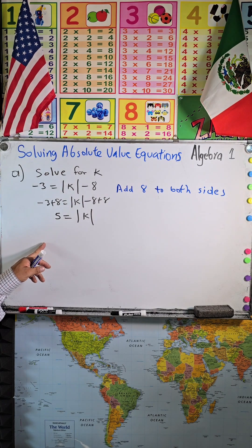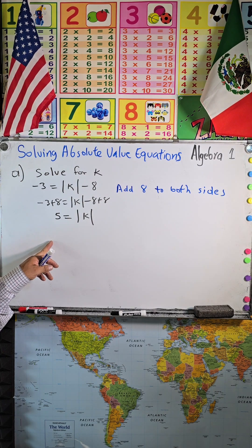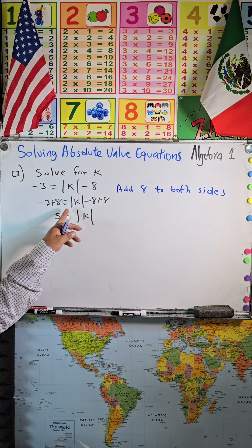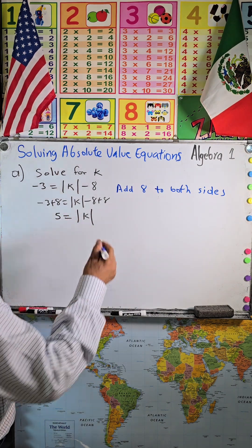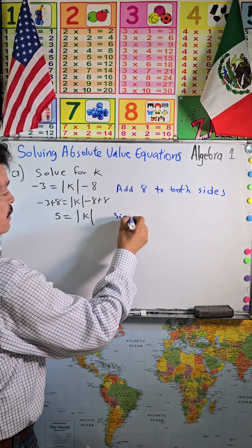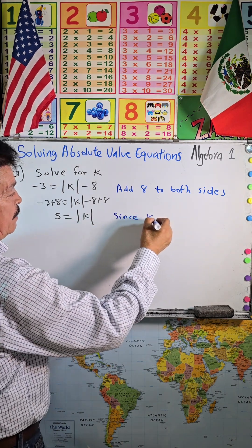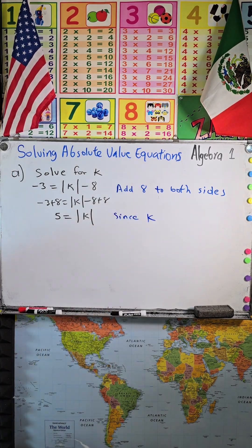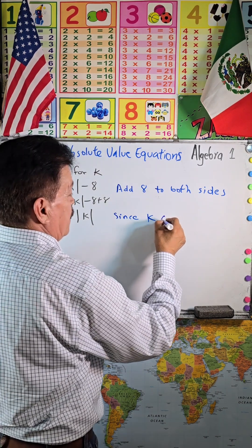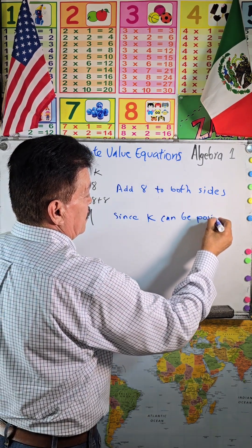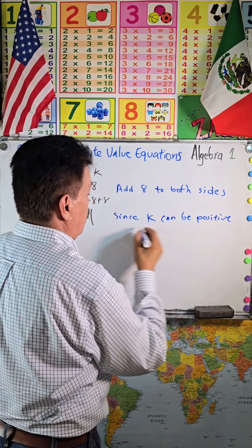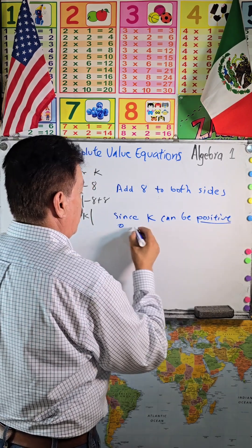Since k can be either positive or negative, remember the rule: k can be positive or negative.